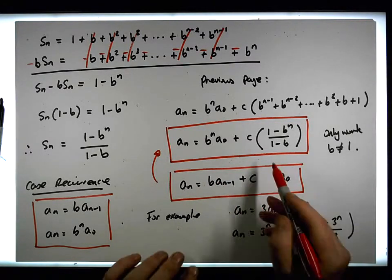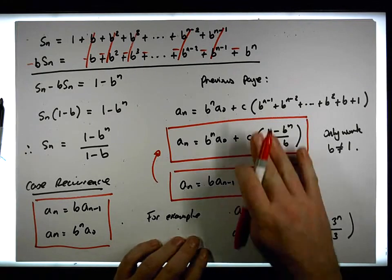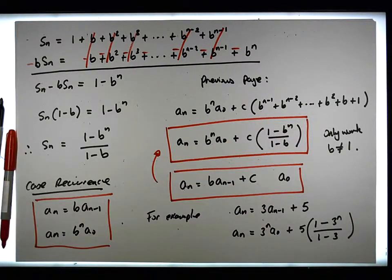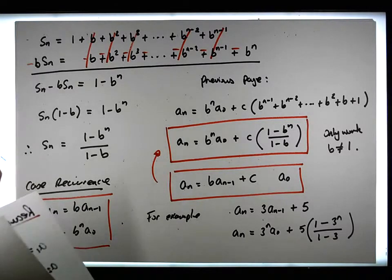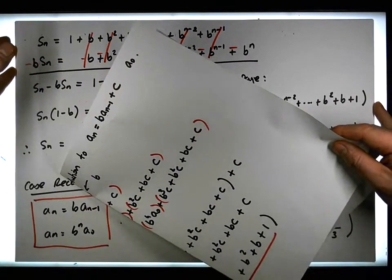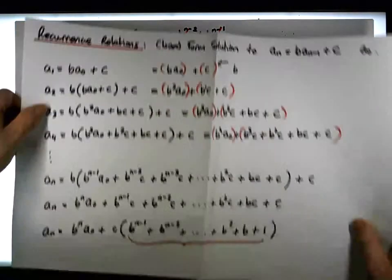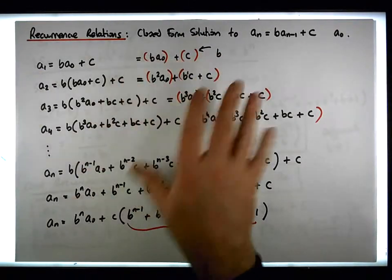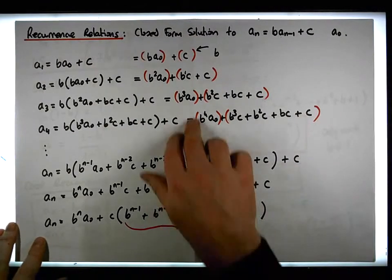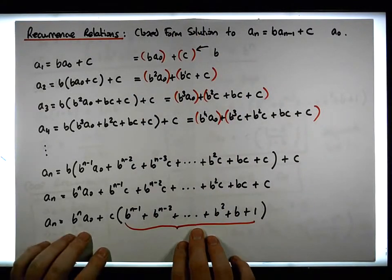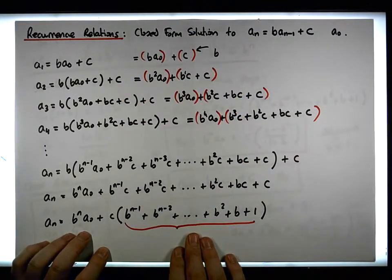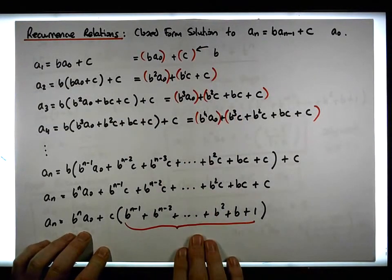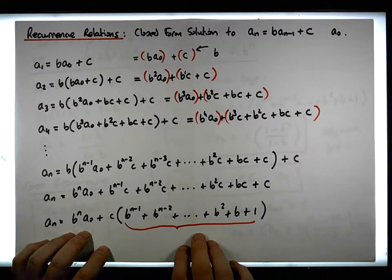When c equals zero, that heterogeneous solution becomes the homogeneous case, which is effectively a_n equals b to the n times a zero. That was pretty quick, but at this stage we've probably gotten a handle on the standard algebraic manipulations involved. This was Jonathan Lambert with Maths and Stats — another video in a series on recurrence relations. I hope it was intuitive and helpful. Thanks for watching!